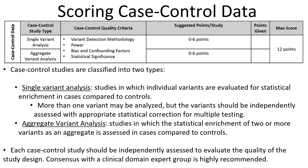When we refer to case-control data for the purposes of this gene disease validity framework, we are referring to those studies in which statistical analysis is used to evaluate variation in cases compared to controls. Case-control studies are classified into two types. Single-variant analysis studies are those in which individual variants are evaluated for statistical enrichment in cases compared to controls; more than one variant may be analyzed, but the variants are each independently assessed with appropriate statistical correction for multiple testing. Aggregate variant analysis studies are those in which the statistical enrichment of two or more variants as a group is assessed in cases compared to controls. Points for case-control studies are assigned based on the overall quality of each study and may be adjusted at the discretion of expert opinion, considering factors such as variant detection methodology, power, bias confounding, and statistical significance.